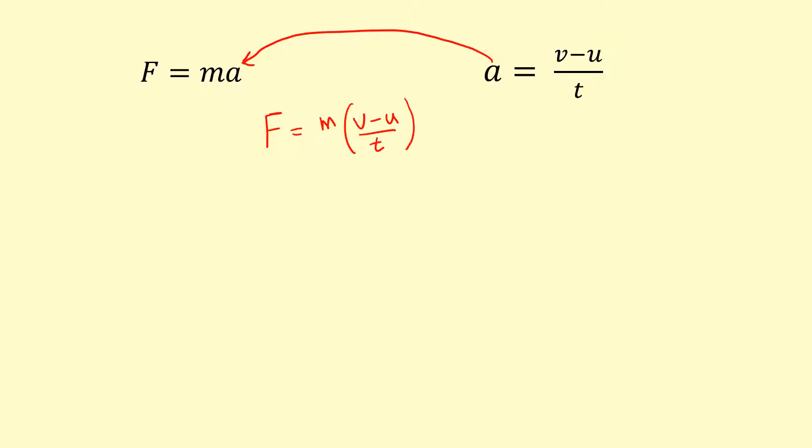And if I expand that, I get a really useful equation, which is F equals mv minus mu over delta t. Basically, it should be delta t over here, but I've just been ignoring that for now.